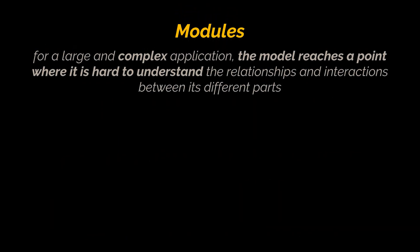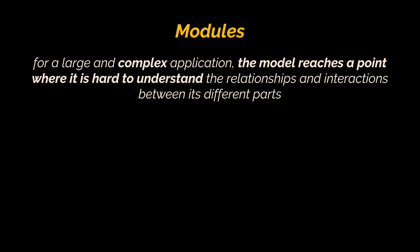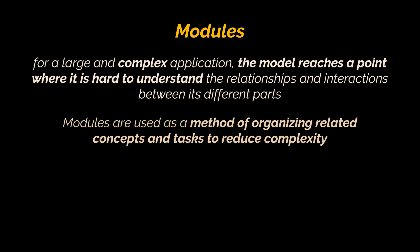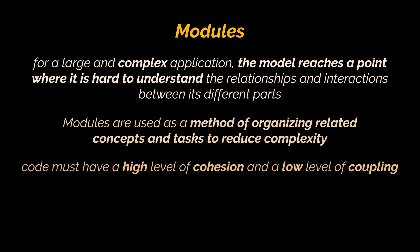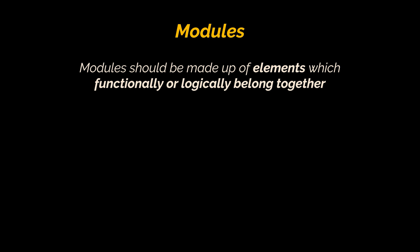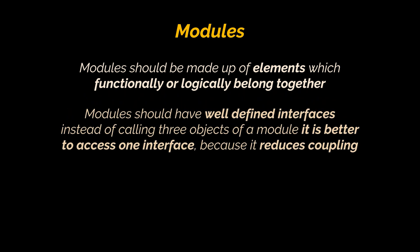Let's talk about modules. For a large and complex application, the model tends to grow bigger and bigger until it is hard to talk about and understand the relationships between its different parts. For that reason it is necessary to organize the model into modules. Modules are used as a method of organizing related concepts and tasks to reduce complexity. It is widely accepted that software code should have a high level of cohesion and a low level of coupling. It is recommended to group highly related classes into modules to provide maximum cohesion.